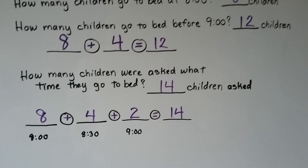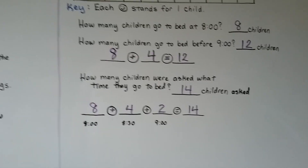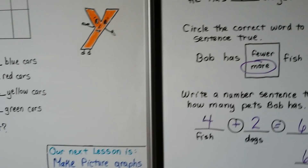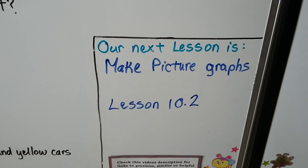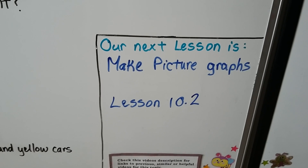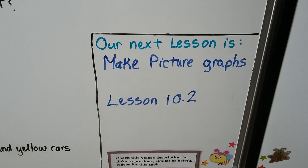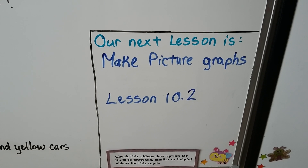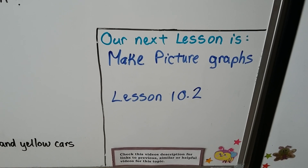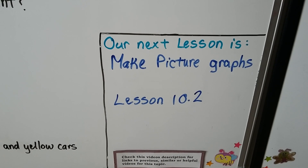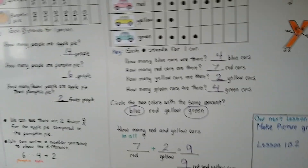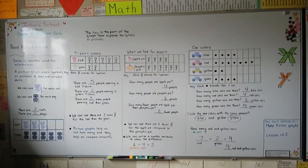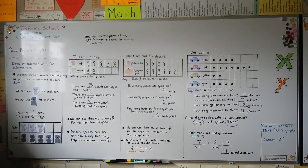You can make your own picture graphs. You can compare amounts — count your toys and see how many types you have, compare cars to trucks, or compare blocks and their colors. Our next video is going to be 'Make Picture Graphs,' lesson 10.2 — we're going to be making our own picture graphs from data. Have a great day and I'll see you next time. Bye!